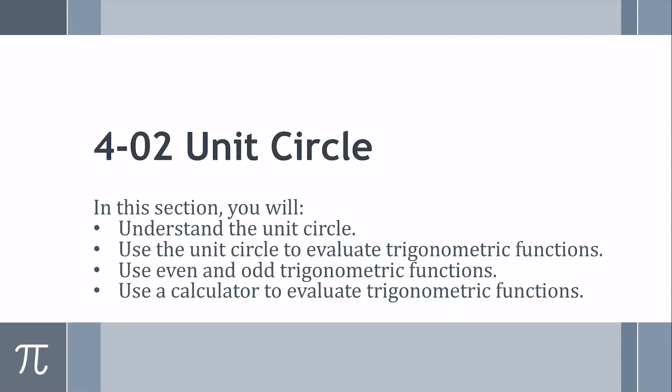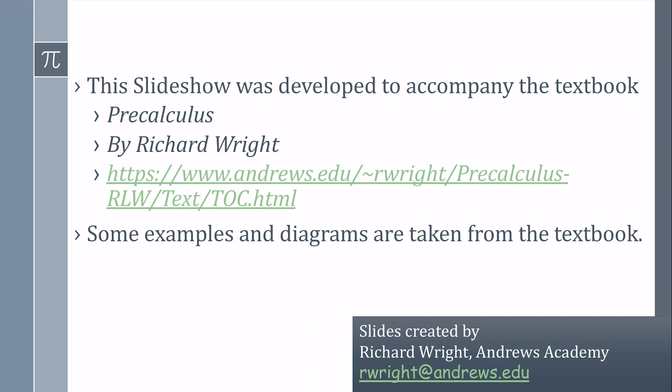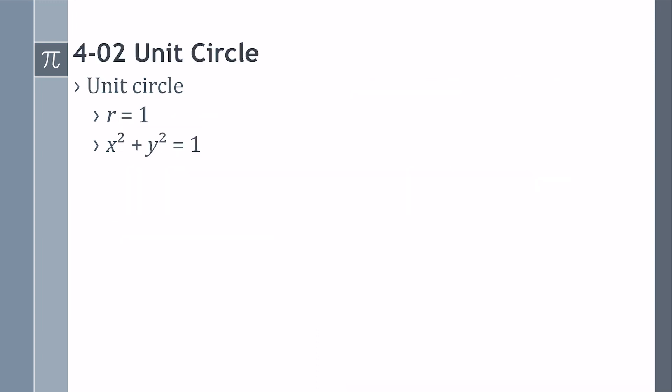Lesson 4-2, the unit circle. The unit circle is a circle whose radius is 1 unit, so its equation is x squared plus y squared equals 1. It's just a circle with a radius of 1.